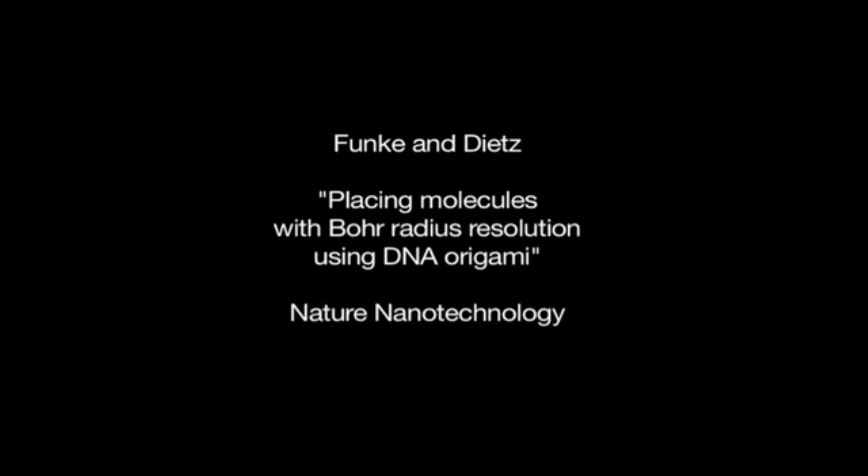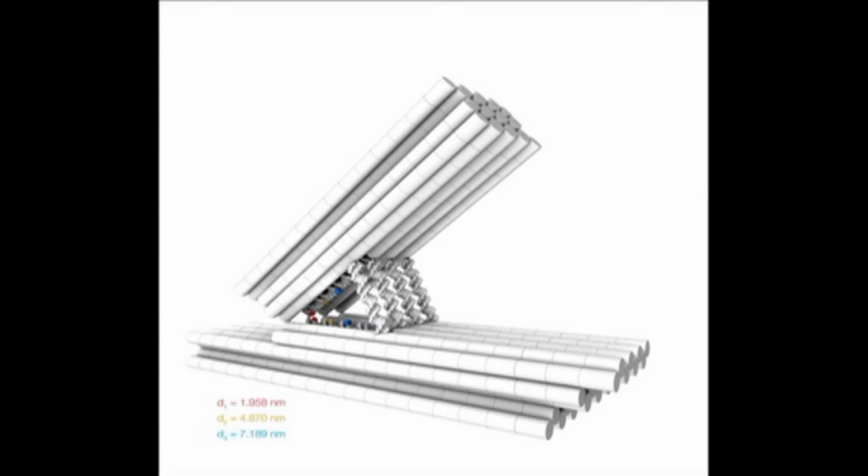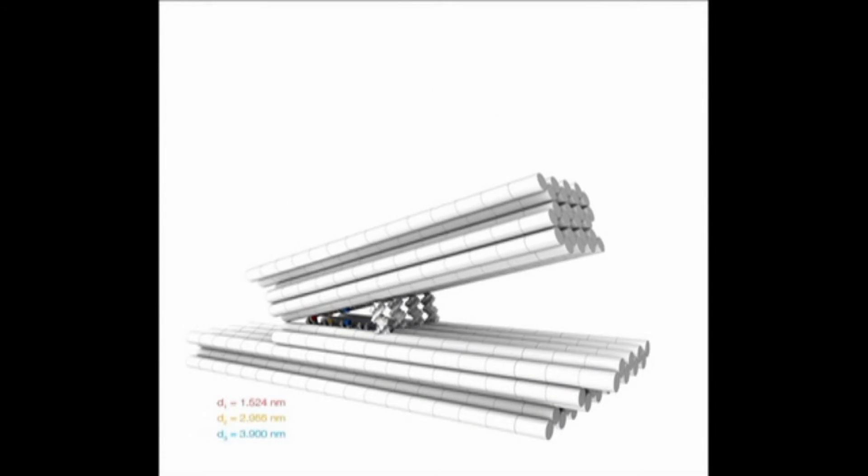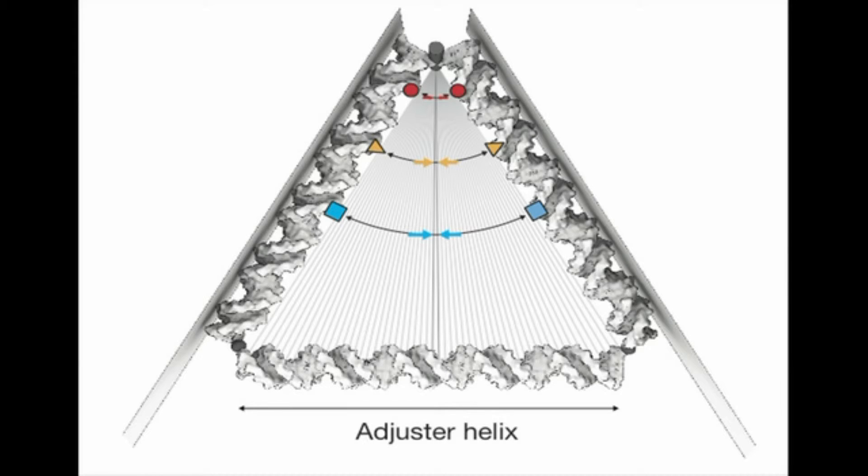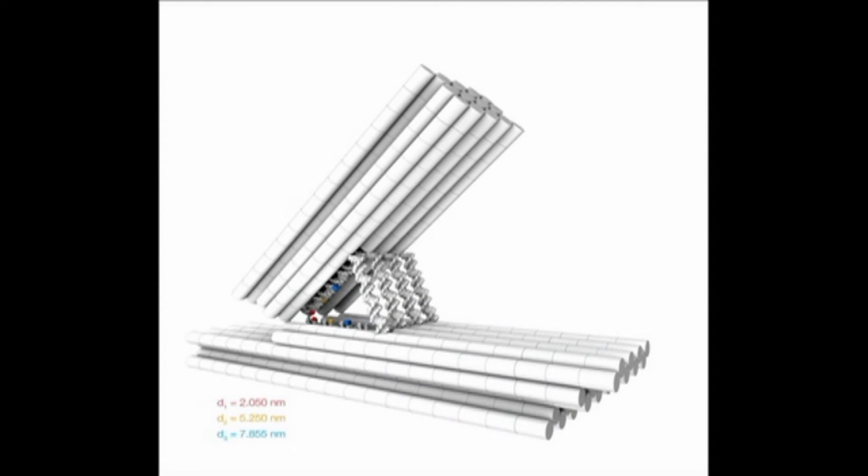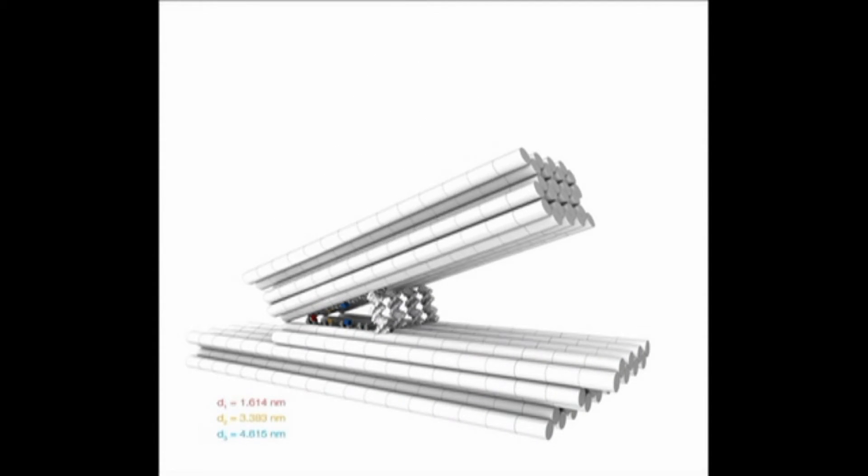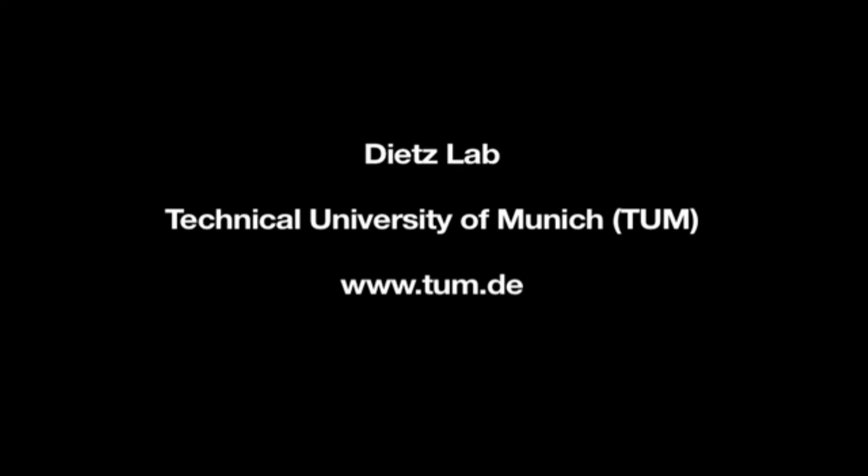The second machine can manipulate molecules and place them as accurately to the width of a hydrogen atom. This level of precision for manipulating molecules could allow us to make things we didn't know we could make before, which is something which is quite incredible.